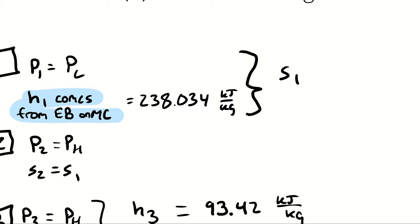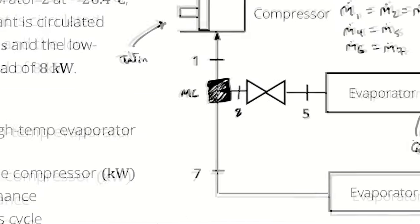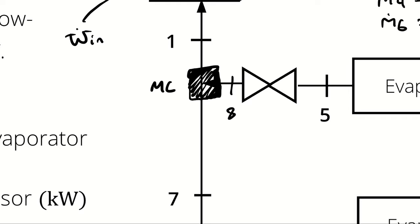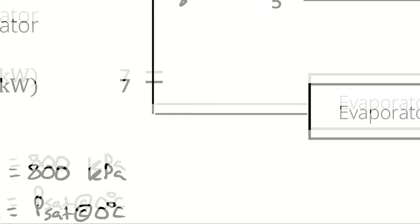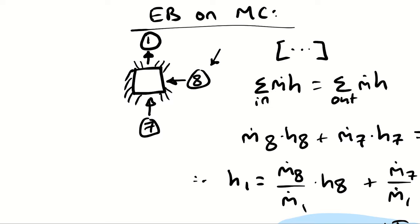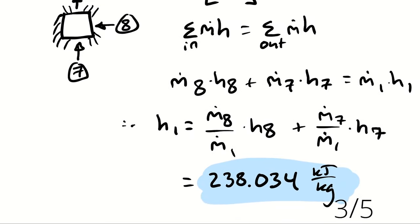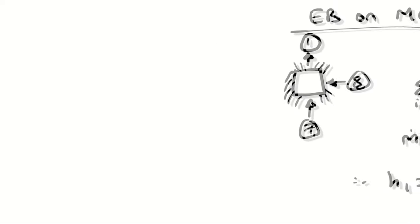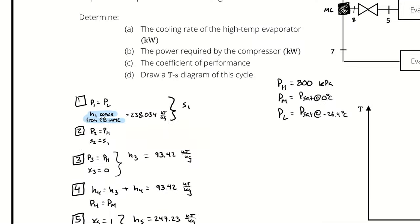We can use the enthalpy at state 1 and the low pressure — the saturation pressure corresponding to negative 26.4 degrees Celsius — to determine entropy at state 1. Once we have that entropy, we can use s2 = s1 and the high pressure to find h2. Also worth noting: state point 8 was not strictly necessary — since m8 = m5 and h8 = h5, we could have used state point 5 directly in the mixing chamber energy balance.